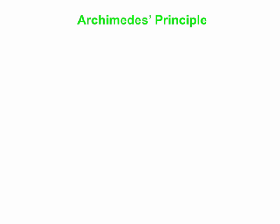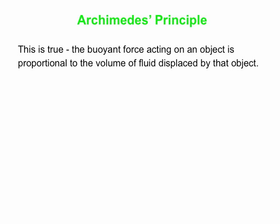Let's talk about Archimedes Principle a little bit. Archimedes was a famous Greek fellow who was working with the king, and the king was worried that the crowns he was getting were not made of pure silver or pure gold. He thought the craftsman maybe were trying to cheat him by putting lead at the core, and so Archimedes was trying to figure out some way to investigate this. What he found was that the buoyant force acting on an object is proportional to the volume of fluid displaced by that object.